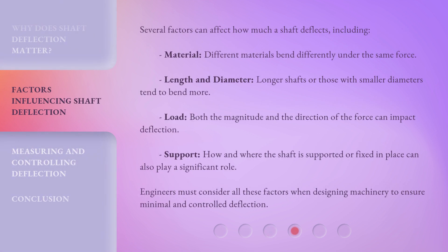Several factors can affect how much a shaft deflects, including: material — different materials bend differently under the same force; length and diameter — longer shafts or those with smaller diameters tend to bend more; load — both the magnitude and the direction of the force can impact deflection; and support — how and where the shaft is supported or fixed in place can also play a significant role. Engineers must consider all these factors when designing machinery to ensure minimal and controlled deflection.